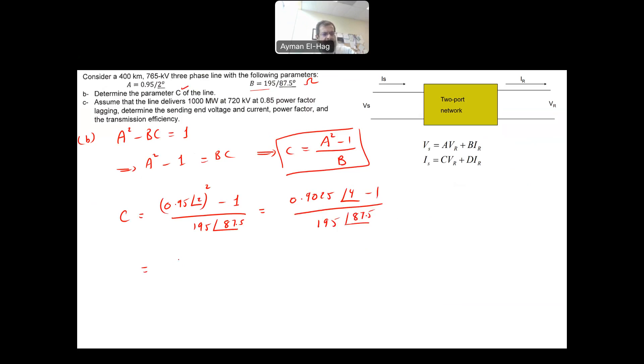And you will find from this your C is equal to 6.05 times 10 to the minus 4 angle of 60.3. And the unit here is Siemens. And C is usually a very small number. In the short line it is 0 actually. And then if you use the medium or the long, you will have some value. But it is usually a very, very small number. Okay. So that's how to calculate your C.